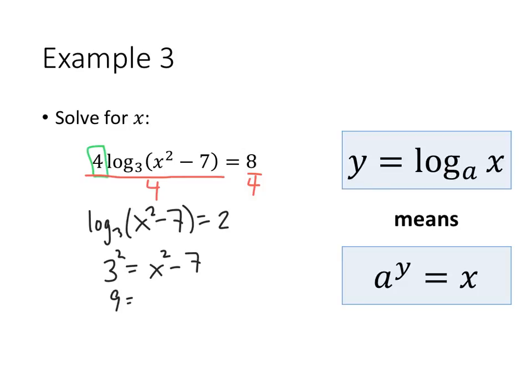3 to the 2, that's 3 squared, that's 9. 9 equals x squared minus 7. Add 7 to both sides, I get 16. So x squared equals 16.